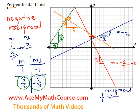So every time you see this expression, perpendicular lines, you know that the slopes are going to be negative reciprocals.